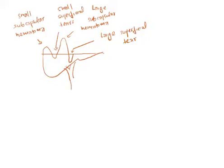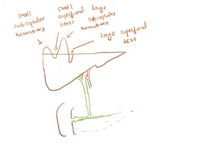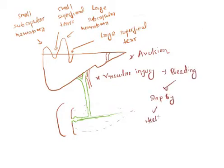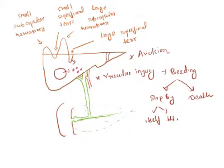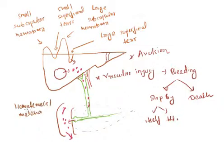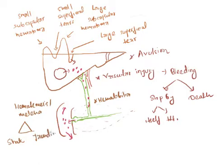This is our bile duct and hepatic artery. The liver can undergo avulsion. There can be vascular injury to the hepatic artery, hepatic veins, or the portal vein. Bleeding can stop by itself or can lead to death. The hematoma or tear can communicate with the bile duct, resulting in hemobilia — the presence of blood in the bile duct — which presents as biliary colic, jaundice, and hematemesis or melena.